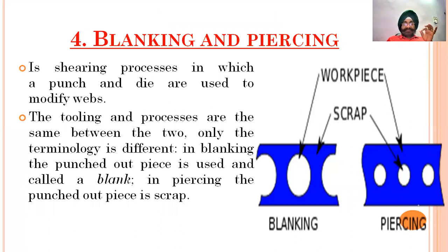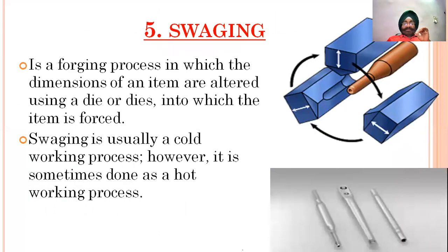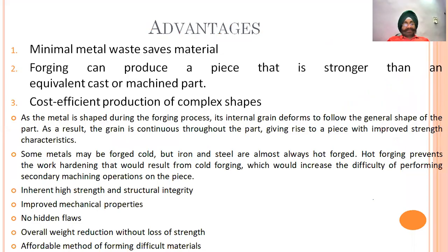Trimming is a shearing process in which a punch and die are used to modify webs. Blanking or piercing — in blanking, a piece is cut from the workpiece, while piercing is a forging process in which dimensions of an item are altered using a die into which the item is forced. There are several advantages, and I will discuss three of them.